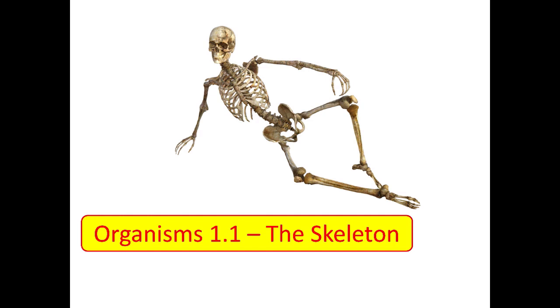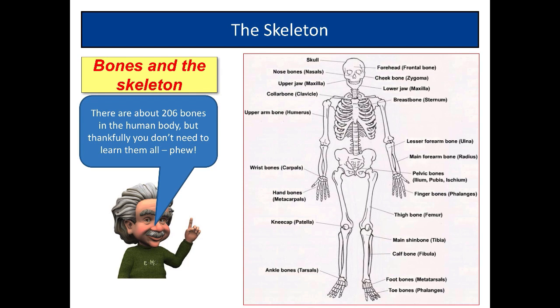Hello and welcome to this organisms video. In this one, we're looking at the skeleton. Let's look at the skeleton itself. Here we have the skeleton, and Einstein says there are about 206 bones in the human body. This is not showing all of them here, and you actually don't need to learn all of these. Let's draw up the pen and have a look at what you do need to know.